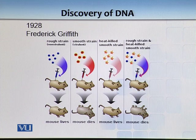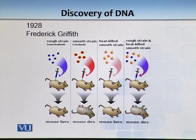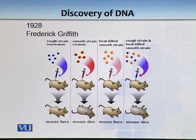When you heat-kill a smooth strain, the mouse lives — a heat-killed strain cannot cause disease. But this is very interesting: if you mix a rough strain and a heat-killed smooth strain, the mouse dies. Even though the rough strain alone does not kill, and the heat-killed strain alone does not kill, together they do.